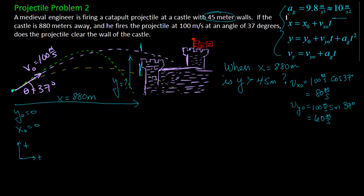Now let's start with the x equation. I'll use that one first. So I know x is going to be 880 meters. So I can say 880 meters is equal to my initial x position is zero plus my x velocity, which is 80 meters per second times t. Solving for t, I get t is going to be 880 meters divided by 80 meters per second. Meters cancel out. I get 11 seconds. So this is the time it takes the projectile to reach the castle wall.